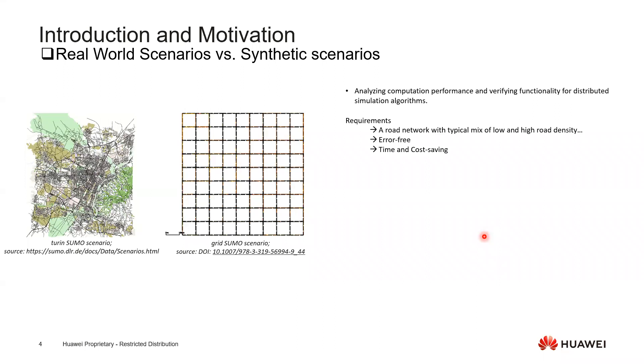However, at Huawei, we are trying to use cloud technology to run very large-scale simulation. Therefore, our core research topics is in the distributed or parallel execution of traffic simulation. We find that there's a problem if we want to have a very large-scale road network, which also needs to have the typical mix of low and high road density, which need to reflect the traffic patterns as a real world.